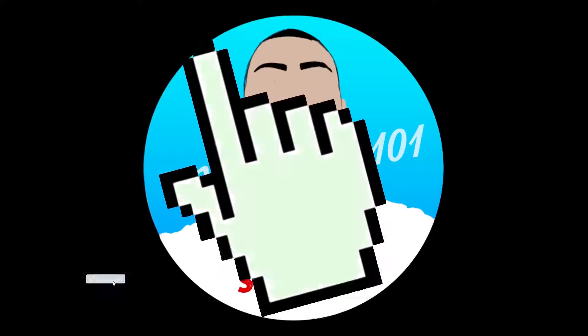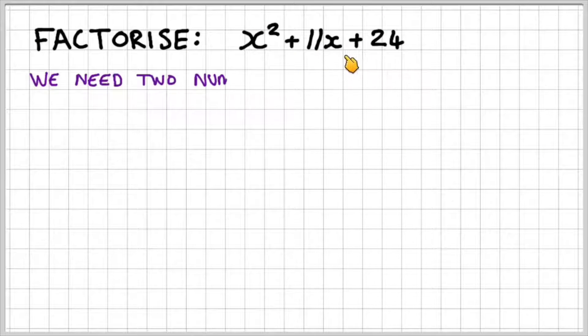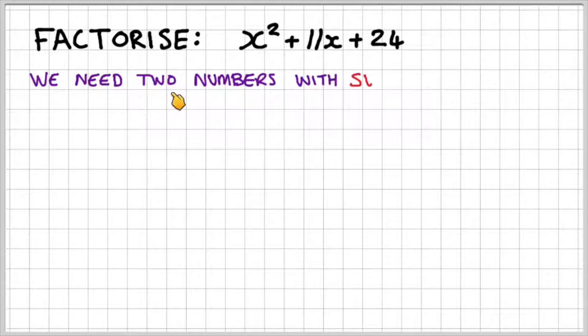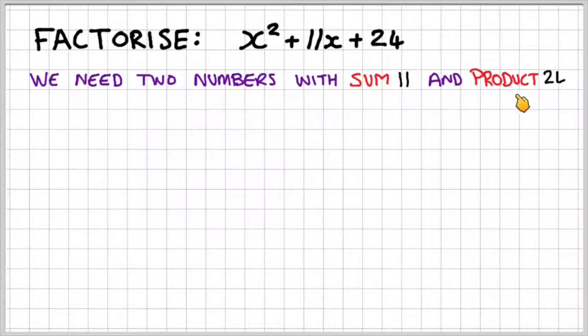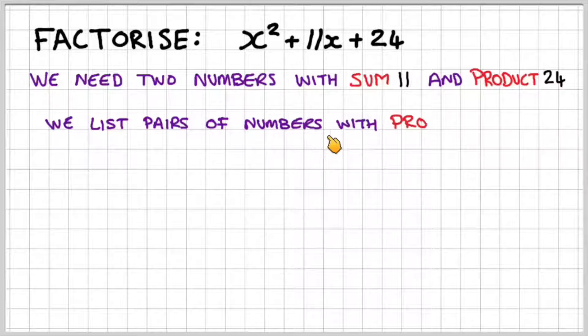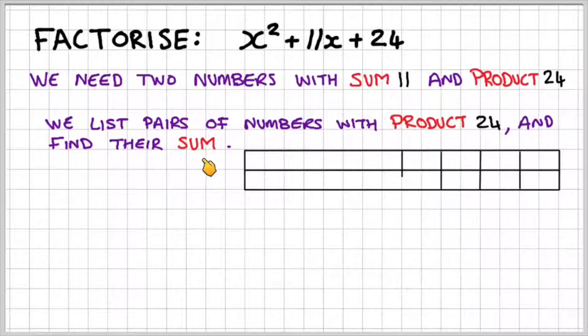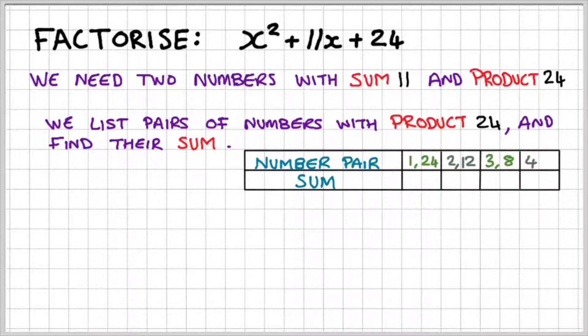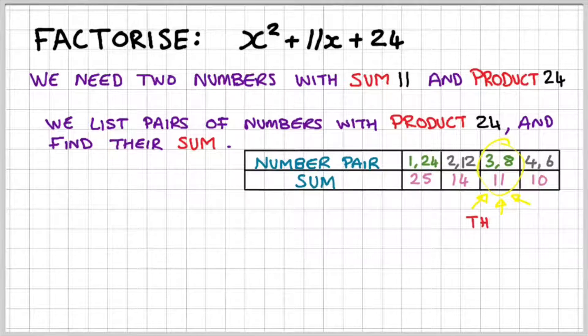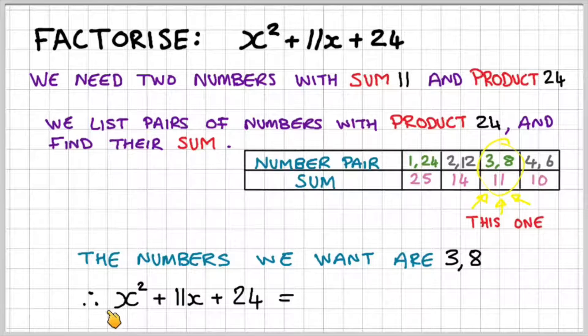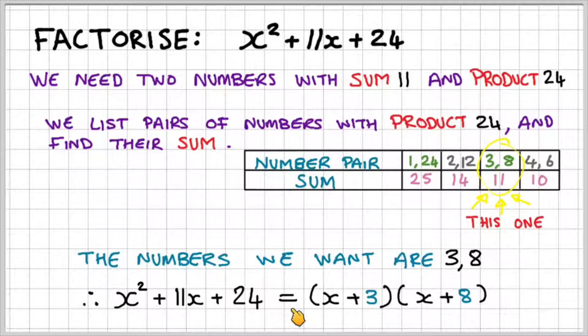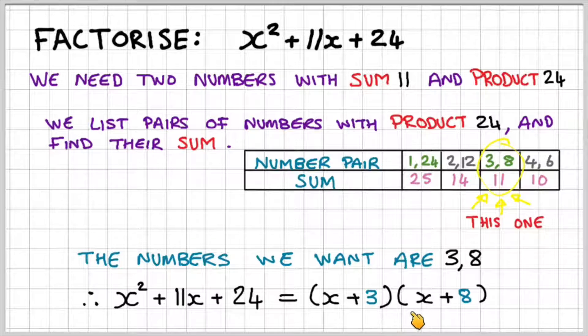Let's look at an example. We'll factorise x squared plus 11x plus 24. We need two numbers with the sum of 11 and the product of 24. We can list the pairs of numbers with the product of 24 and find their sums. The numbers that we want are 3 and 8. Therefore, x squared plus 11x plus 24 is equal to x plus 3, x plus 8.